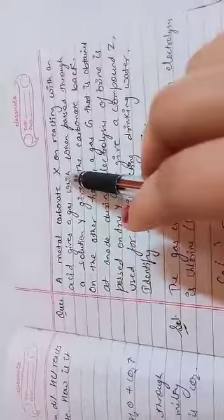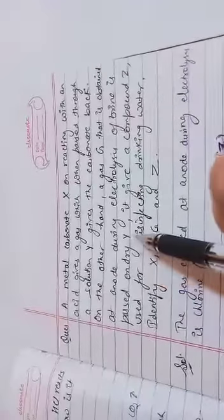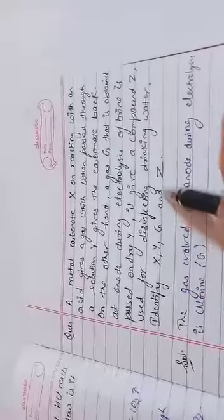Third question: A metal carbonate X on reacting with an acid gives a gas which when passed through a solution Y gives the carbonate back. On the other hand, a gas G obtained at anode during electrolysis of brine (NaCl solution) is passed on dry Y, it gives a compound Z used for disinfecting drinking water. Identify X, Y, Z, and G.